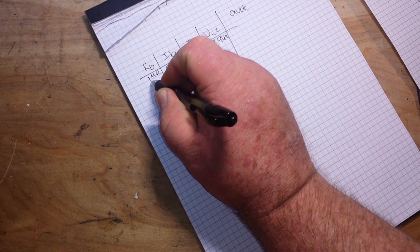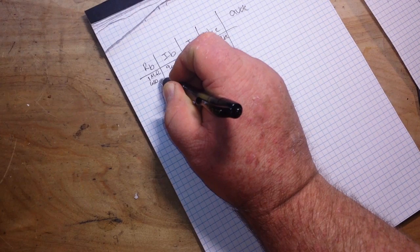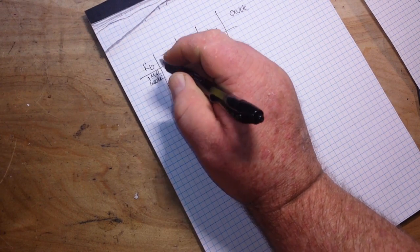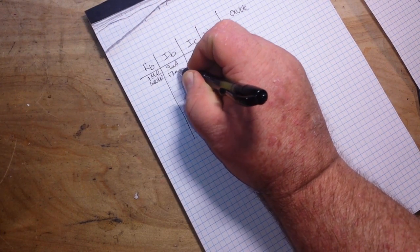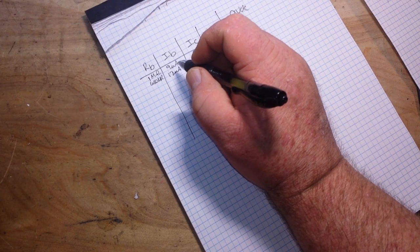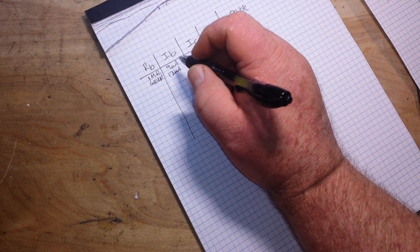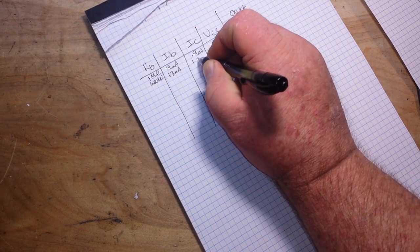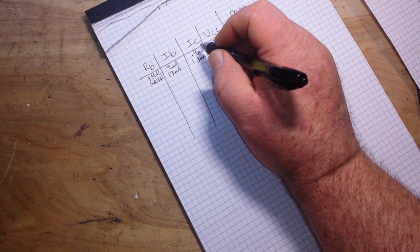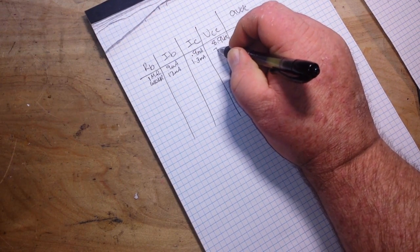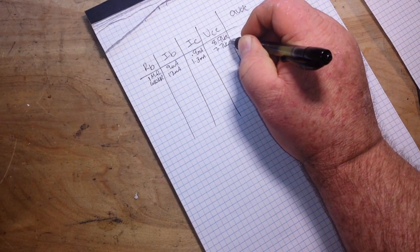Then we drop down to 680 kiloohms, which gave me 13 microamps base current, 1.3 milliamp collector current, and 7.7 VDC.